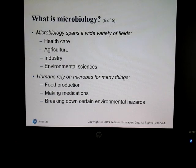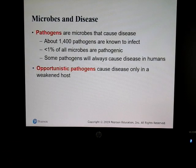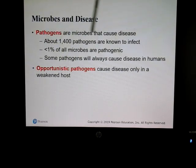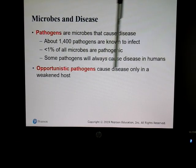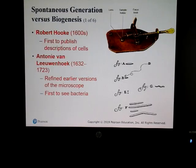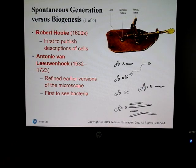Humans rely on microbes for a lot of different things like food production, making medication, and breaking down things in the environment. Two terms to know: pathogen and opportunistic pathogen. Pathogens are microbes that cause disease. Opportunistic pathogens will cause disease only in a weakened host.